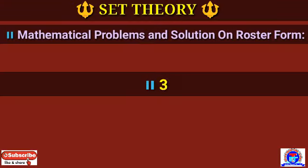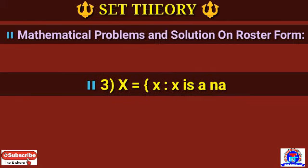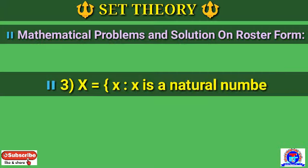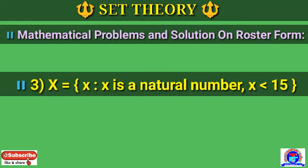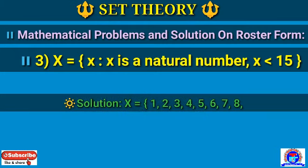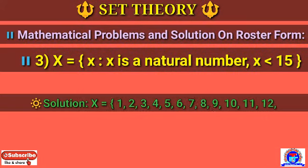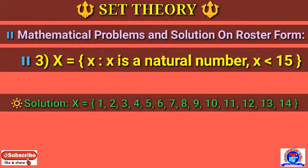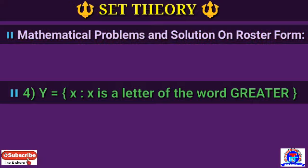Another example: X = {x | x is a natural number, x < 15}. So we write X = {1, 2, 3, 4, 5, 6, 7, 8, 9, 10, 11, 12, 13, 14}. This is the solution.